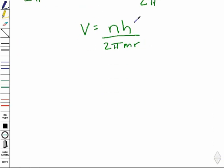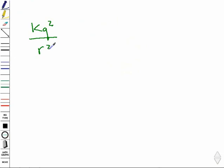Plugging this velocity back into our new form of Newton's second law, we get k, q squared, over r squared is equal to m, n squared, h squared, over 4 pi squared, m squared, r squared. And this still has to be multiplied by r, so instead of our r being squared, we are going to end up with an r cubed.